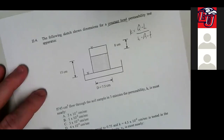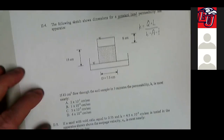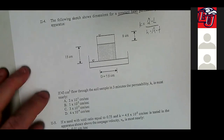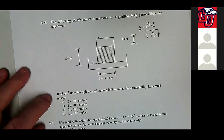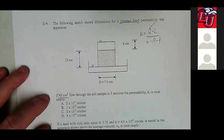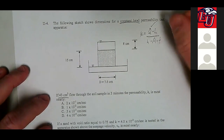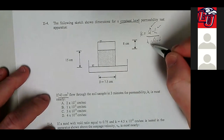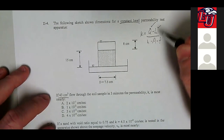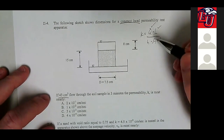So what do we have here — what was given to us? 43 cubic centimeters is Q, the volume of water. L is the length of the soil sample, 15 centimeters — that was given. H is the head differential.